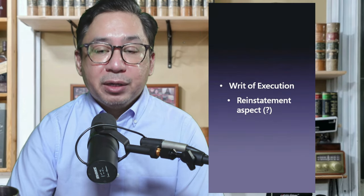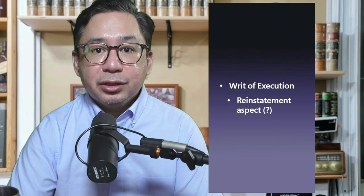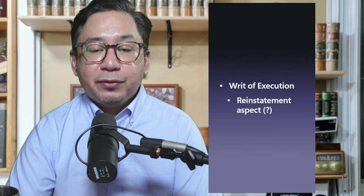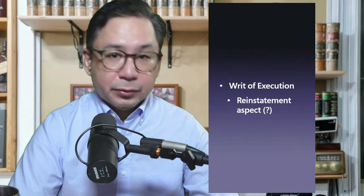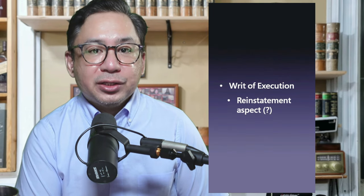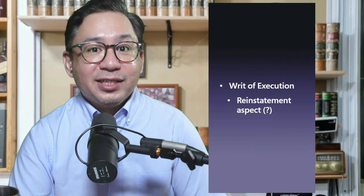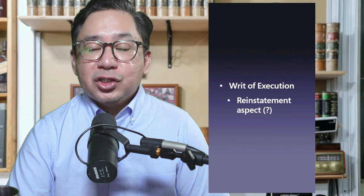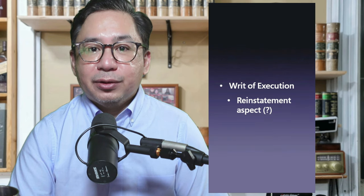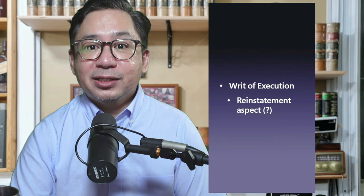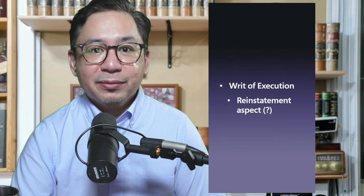Remember that the writ of execution is effective for five years from the date of issuance of the Certificate of Finality. Will a writ of execution be needed for all decisions or orders of the Office of the Labor Arbiter? The reinstatement aspect of the Office of the Labor Arbiter's decision does not require a writ of execution because it is considered self-executory.